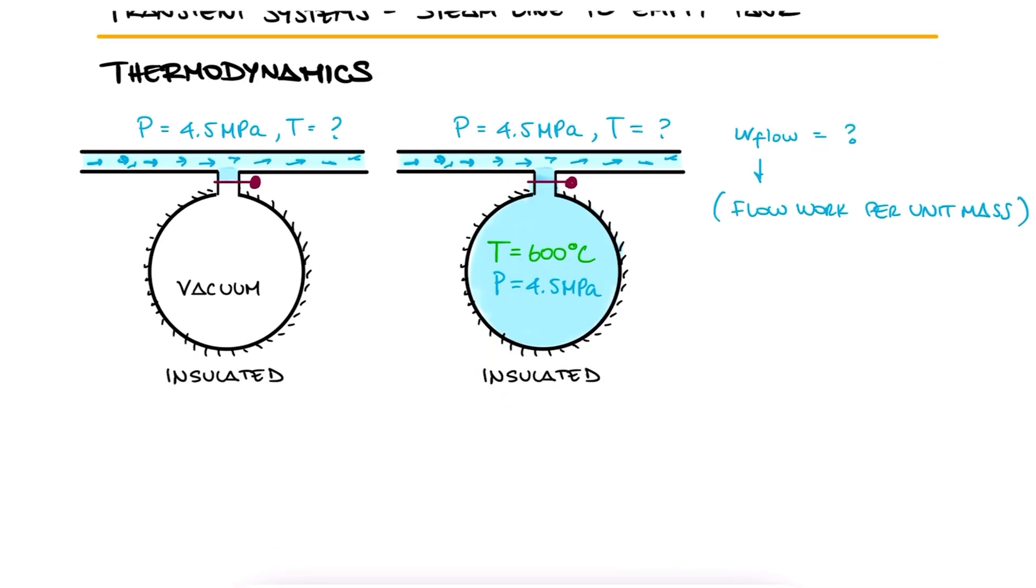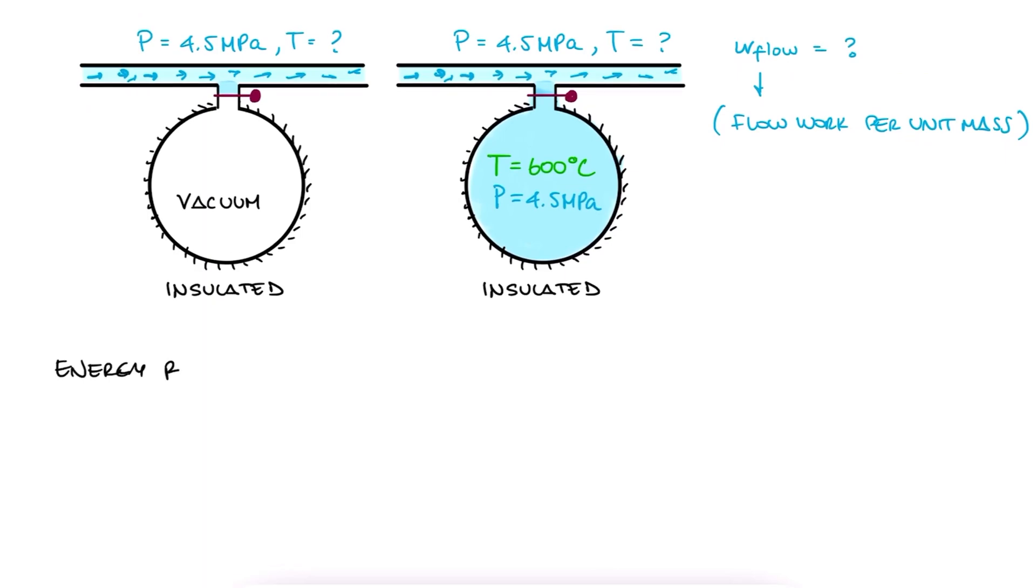This is an easy one. The energy conservation reduces to mass coming in times its specific enthalpy for the change in energy, the mass at the end times its specific internal energy for the final energy, and zero for the initial energy.